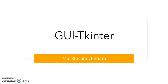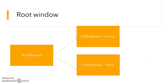Now we'll see, as I've discussed in the last video, that we have two types of child windows. Those two types are canvas and frame. Now what is canvas? Canvas is nothing but a window where we can have shapes. So we can draw a line or make a drawing with the help of this window. First of all, we'll see the use of canvas.